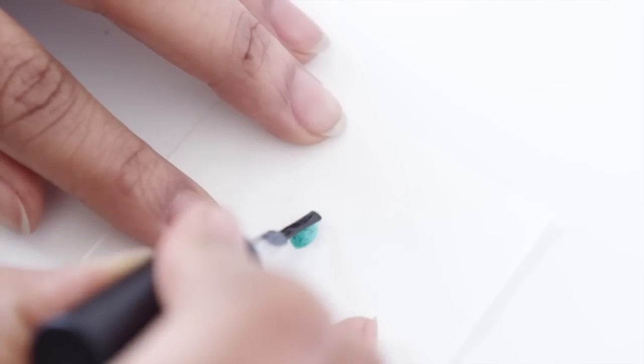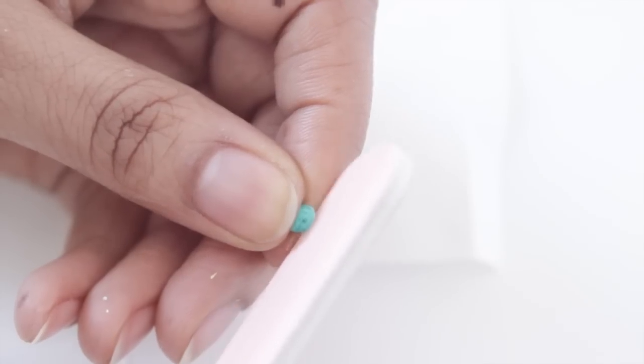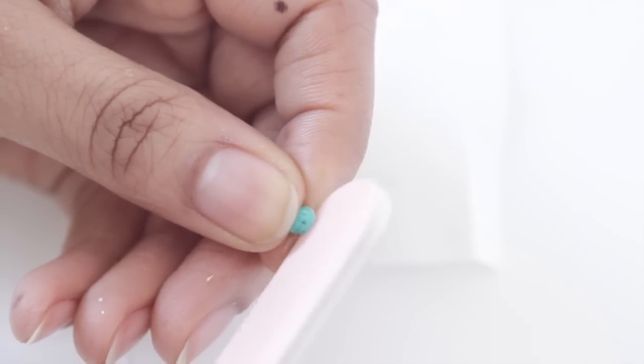So as a last step, again, you're gonna apply your top gel and cure. And if you do have any small imperfections, you can always shape it up with a nail file. And we're done guys.